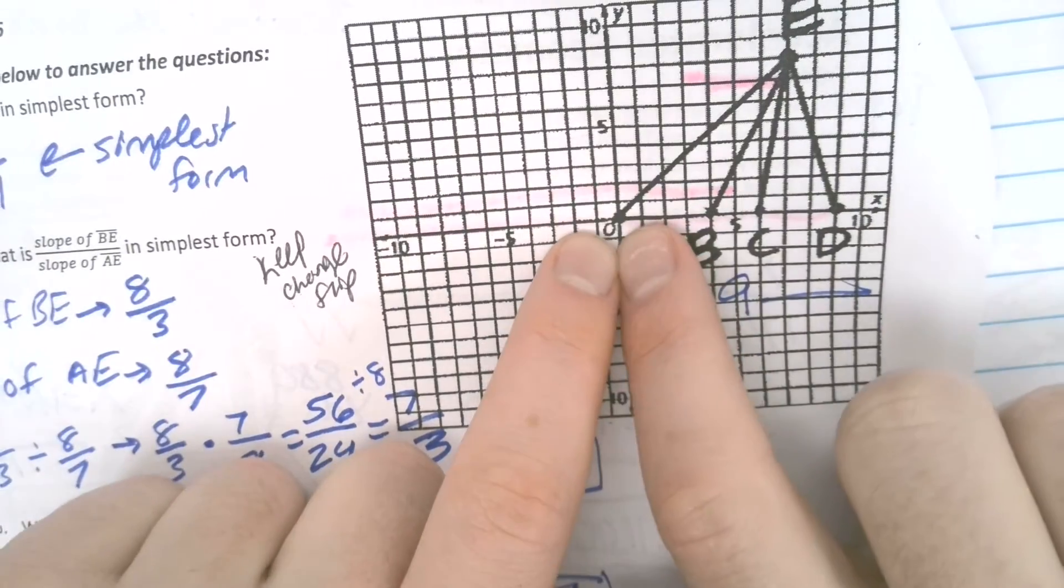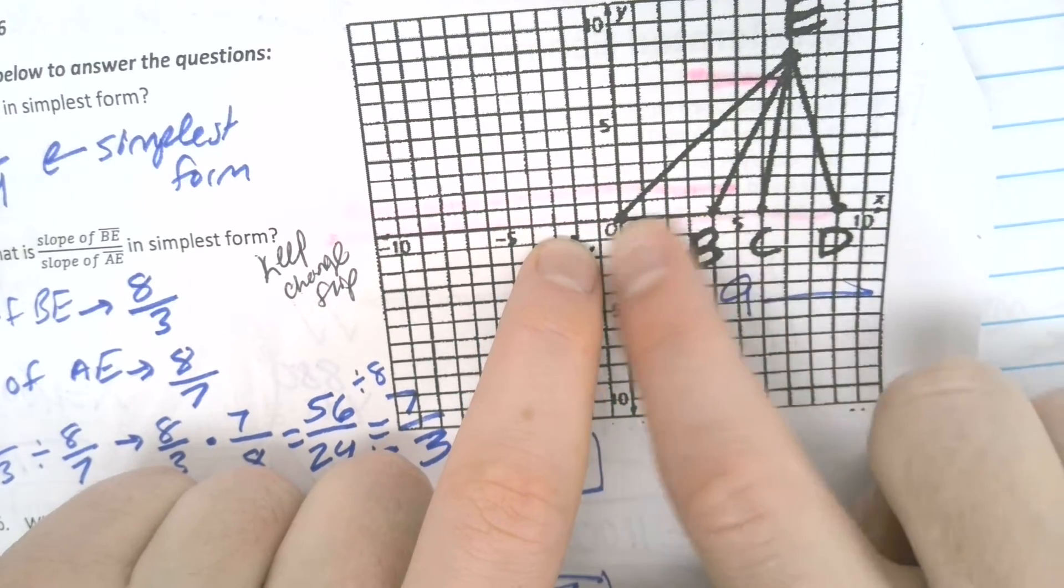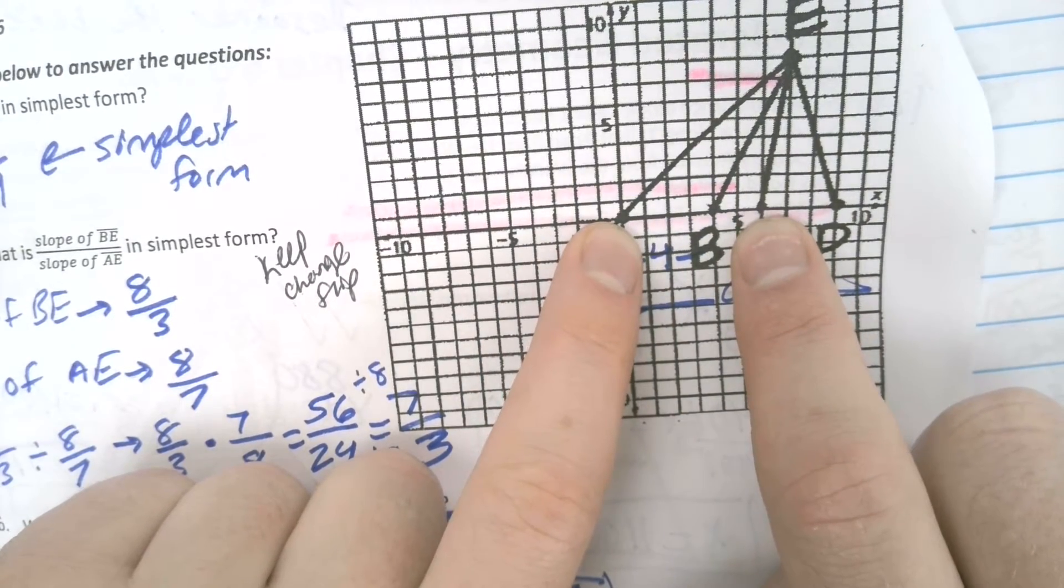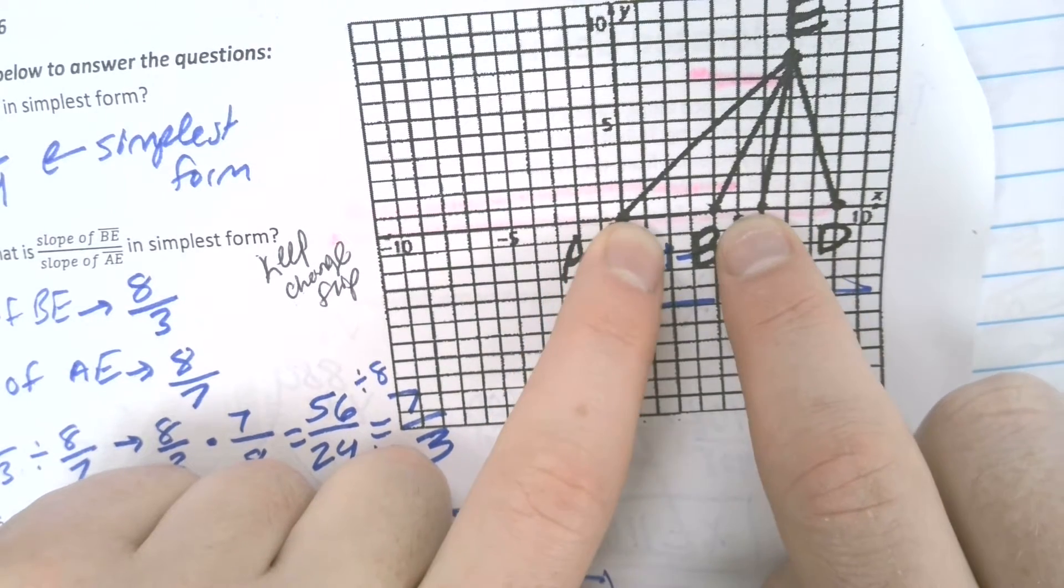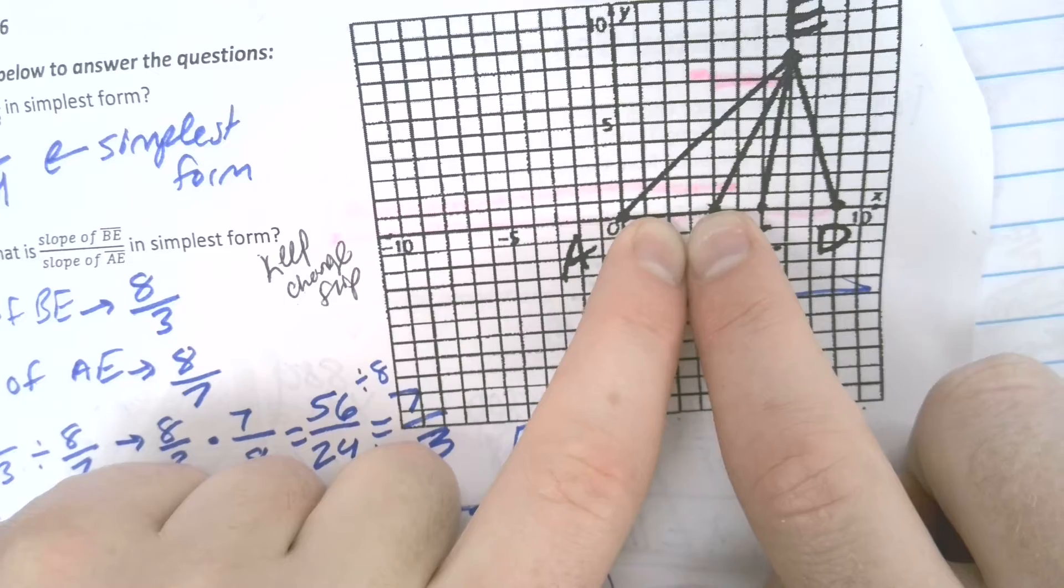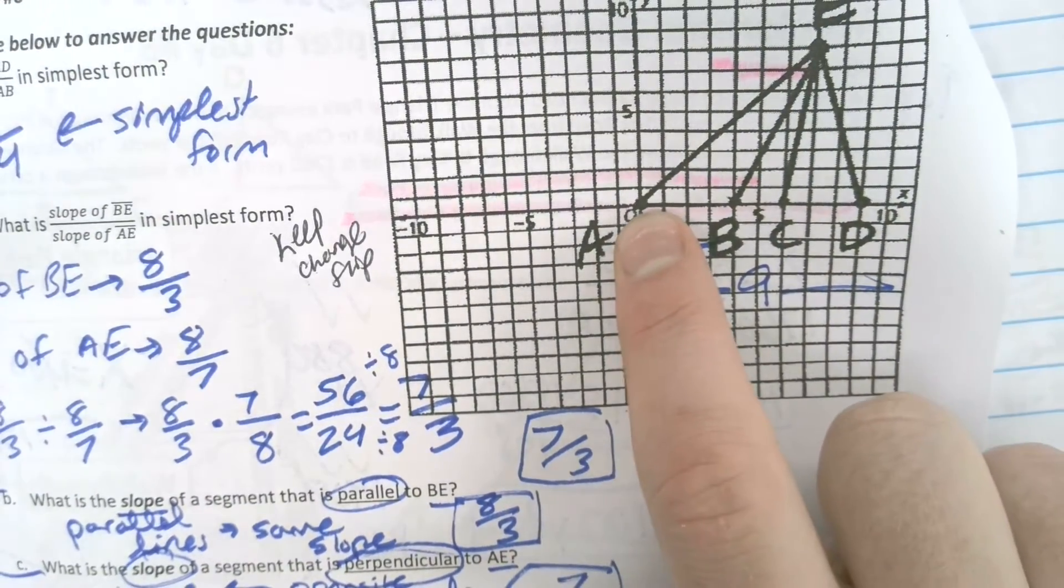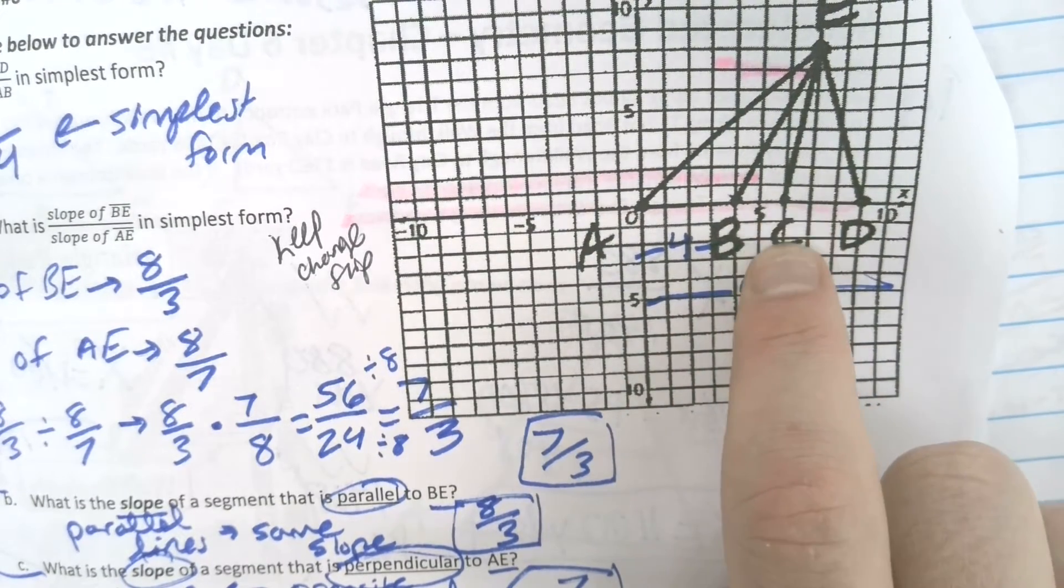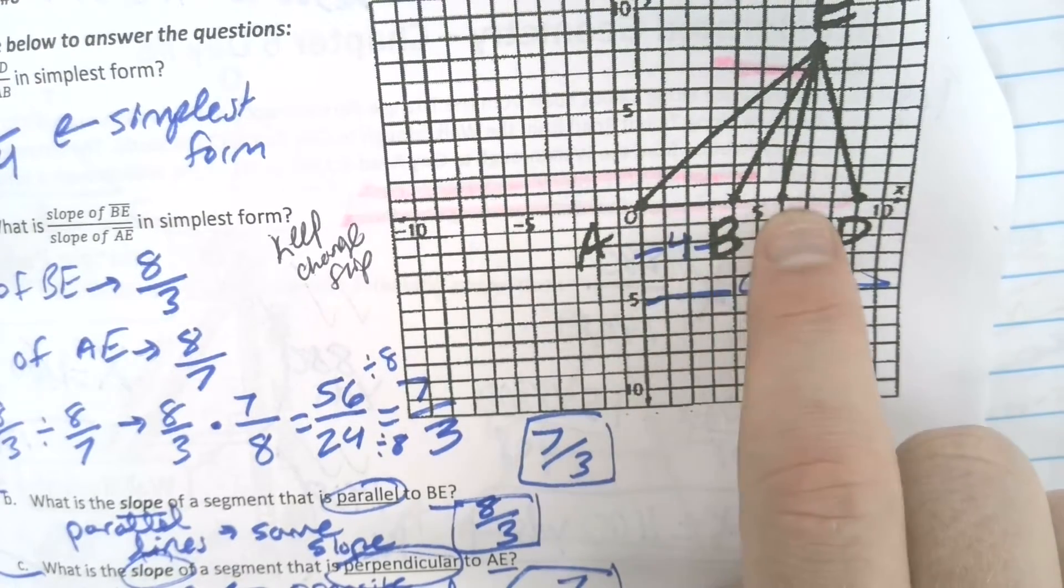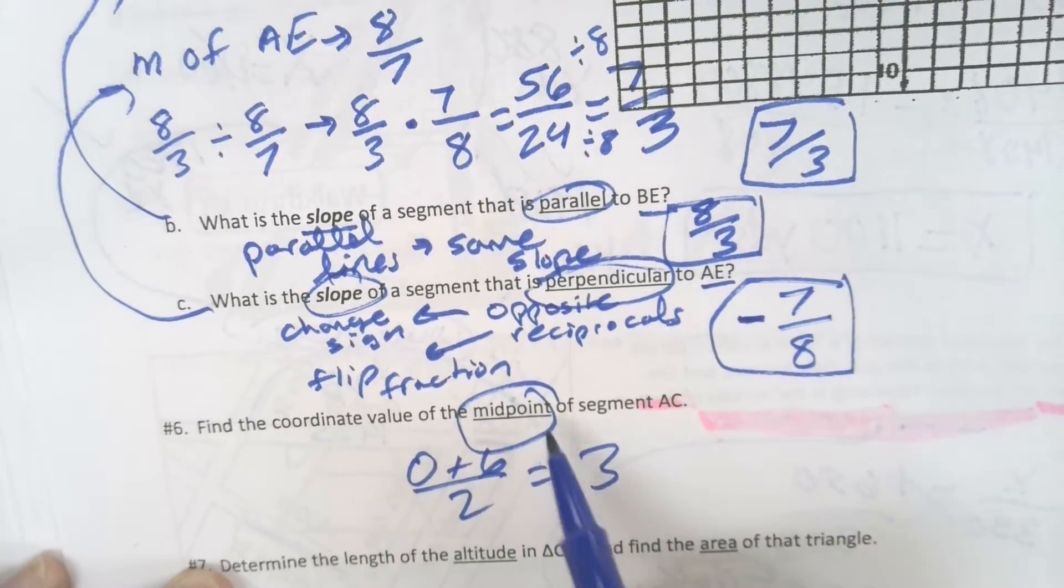And then finally, number 6. Find the coordinate value of the midpoint of segment AC. So AC is from here to here. So from this stretch, we're pretty much trying to find the point in the middle. And a couple ways you could do this. You could either count to find the point in the middle. 1, 2, 3. Boom. Or you could do the math. Take 0, add it to 6, and then just cut that in half. So take this distance and cut it in half. Either way, our point's 3.